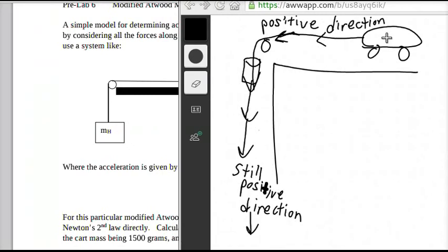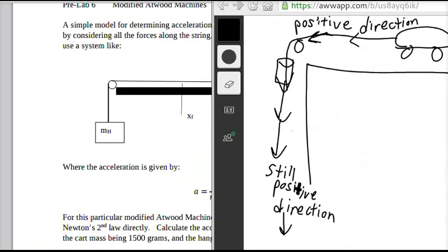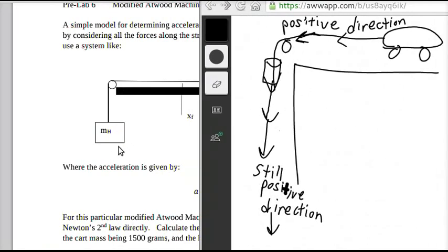As you can see, all of the masses are accelerating together, and we can treat them as one single object. However, only the hanging mass is causing that acceleration.